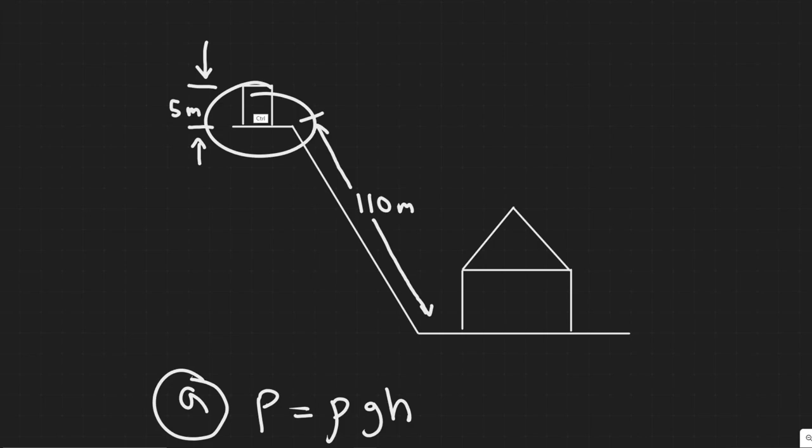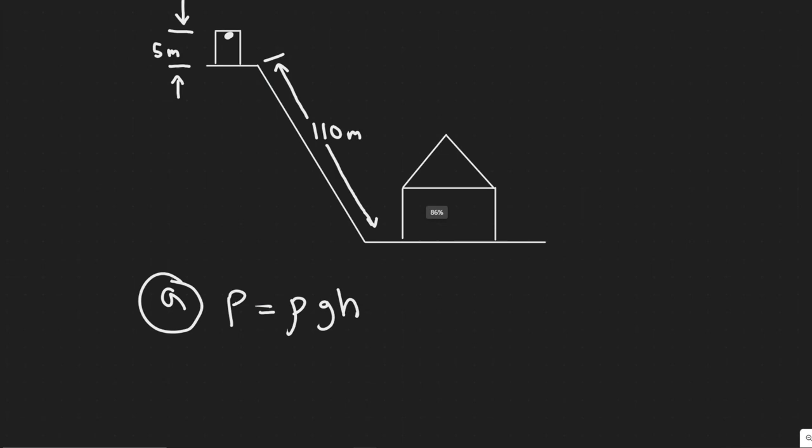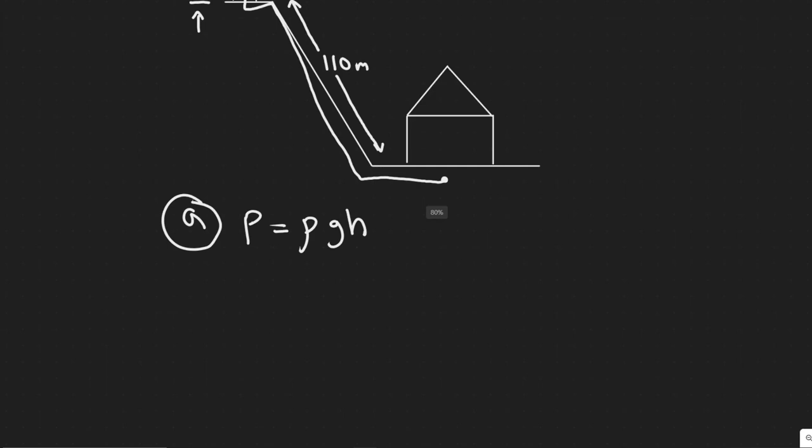So I went ahead and drew the figure here. We know the pipe is going to be from here, it's going to go down like this, and it's going to connect here. And so what we're trying to find in part A is the gauge pressure basically at the house. So keep in mind the pipe is going to go to the house, it's going to go from here up to here, and then basically up to this surface at the top of this well here.